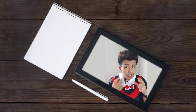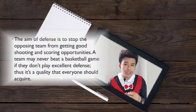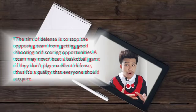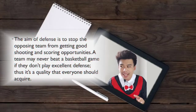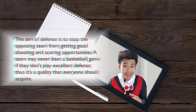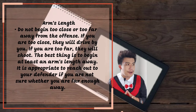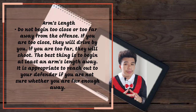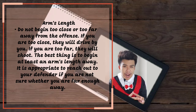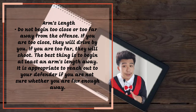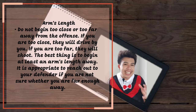Now that we know what dribbling is and the tips for it, let's move on and talk about defense. The aim of defense is to stop the opposite team from getting good shooting and scoring opportunities. A team may never win a basketball game if they don't play excellent defense, so it is a quality that everyone should acquire. For arm's length: do not begin too close or too far away from the offense — if you are too close they will drive by you, if you are too far they will shoot. The best thing is to begin at least an arm's length away.